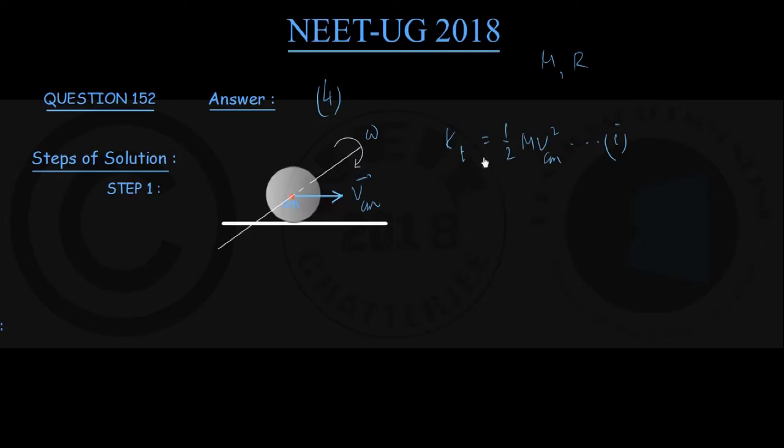So translational kinetic energy is half M VCM squared. At the same time, it possesses rotational kinetic energy KR, given by the formula half ICM omega squared. That is my equation number 2.